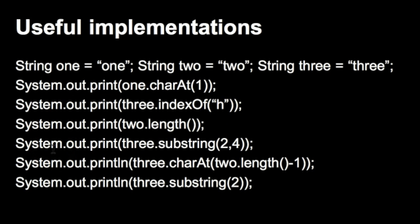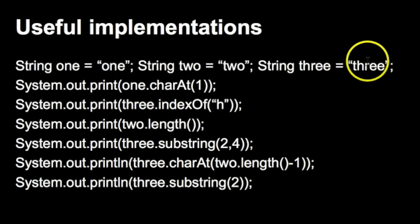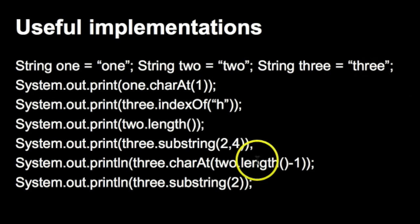The next print statement is three.substring(2, 4). What substring does is it allows you to create a new string — basically chop a string and create a new one. The string 'three' is t-h-r-e-e, at indices 0, 1, 2, 3, 4. substring(2, 4) goes to index 2, which is 'r', and goes up to but not including index 4. So this will print out 're'.